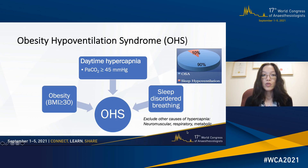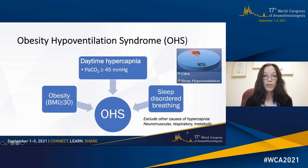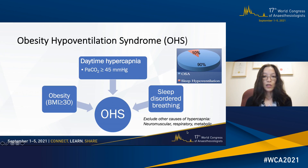The distinguishing feature between OSA versus obesity hypoventilation syndrome is the presence of daytime hypercapnia, defined as an arterial PCO2 greater than or equal to 45 millimeters of mercury. Other causes for hypercapnia should be excluded, such as neuromuscular, respiratory, or metabolic disorders.